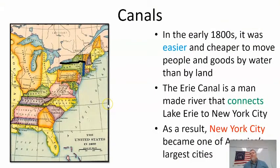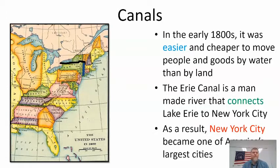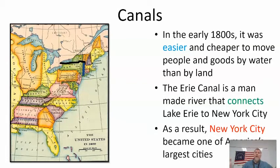Some of the first improvements we see are improvements in canals. Water travel is essential — for most of human history it has been the most efficient mode, and it is still one of the main ways we transport goods across the nation, through large vessels that transport hundreds of shipping containers from continent to continent today. This was also the dominant mode of transportation in the 1700s and 1800s.